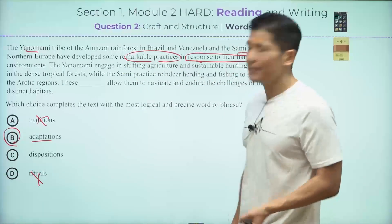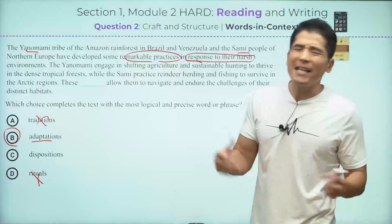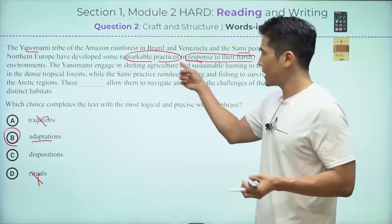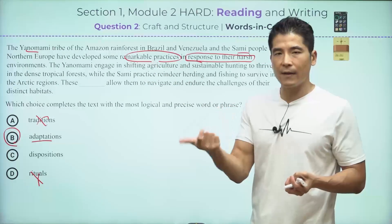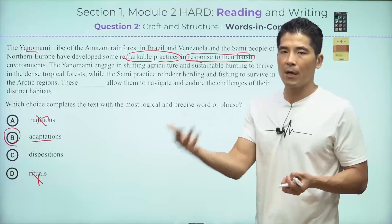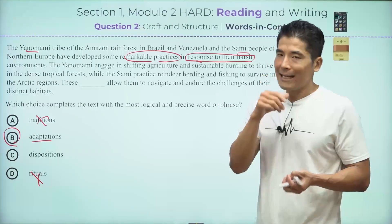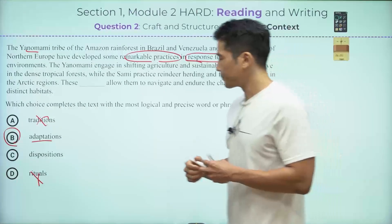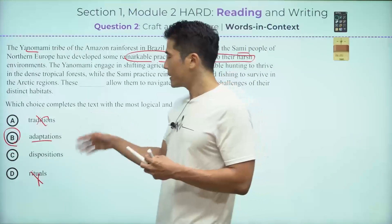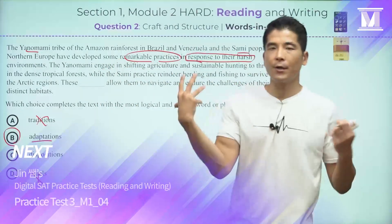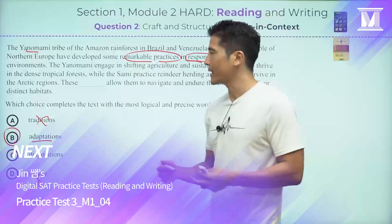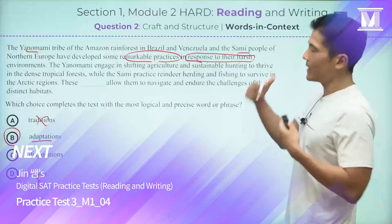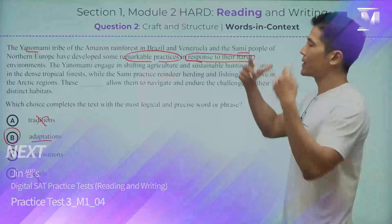Every single correct answer for these questions must be supported by the context. Just because they mention tribal or cultural names and places doesn't mean they're talking about traditional behaviors. The context tells us about the adaptations — the changes they had to make in response to their environment. 'Dispositions' means your character or personality, which doesn't work here because the passage isn't talking about their personalities or attitudes.